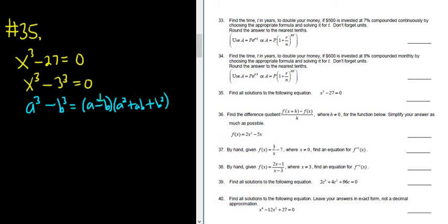So you keep the sign, switch the sign. If it was a plus here, it would be plus here and minus here. Okay, so we have x cubed minus 3 cubed equals 0. That's the same thing. a is x and b is 3. It would be x minus 3 because a is x and b is 3.